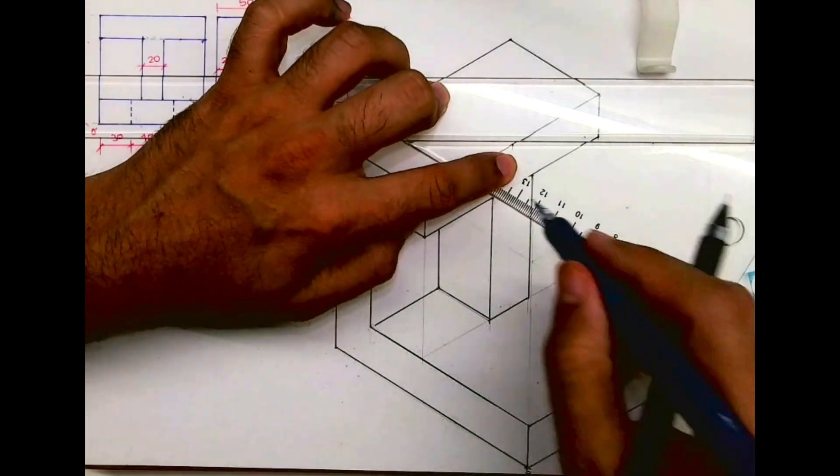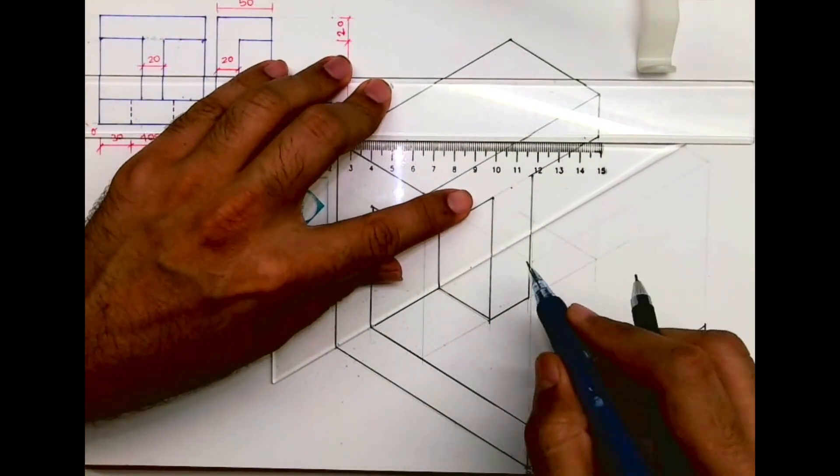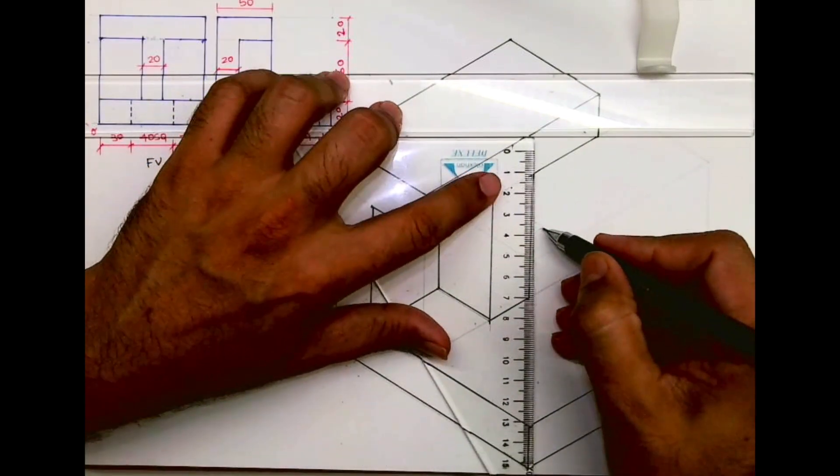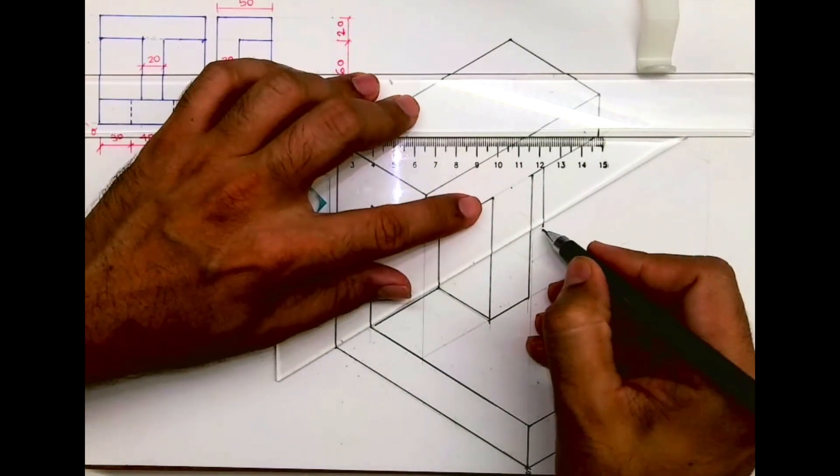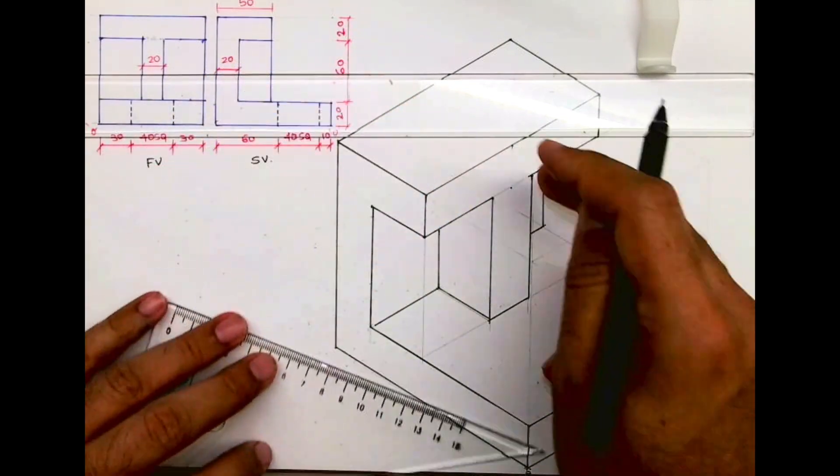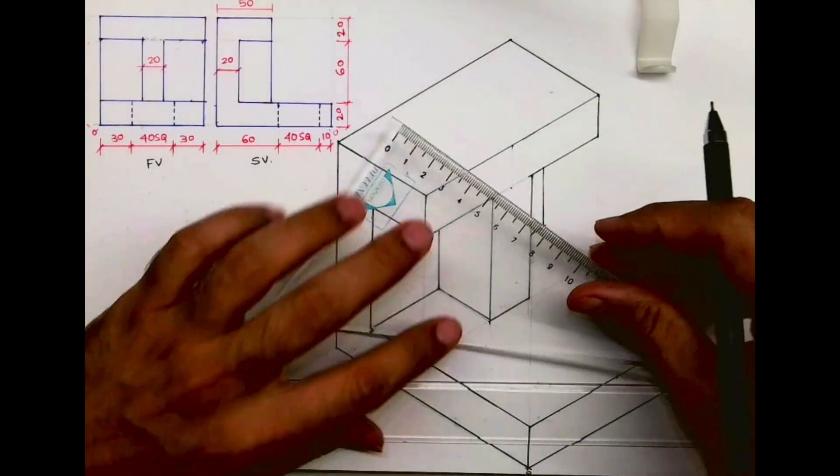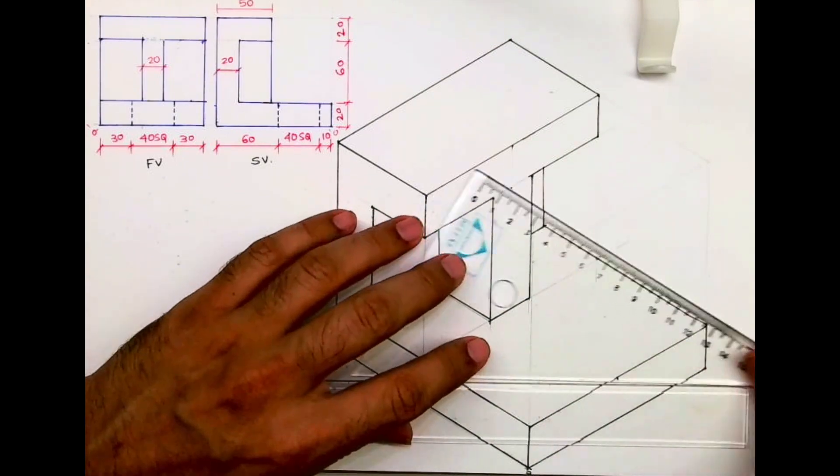And I will extend line from here, and from here I will draw vertical line. So this is how we will get this part, and from here we will draw a line like this.